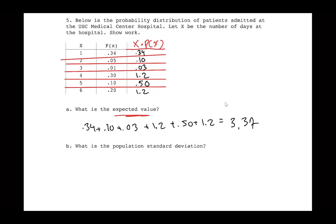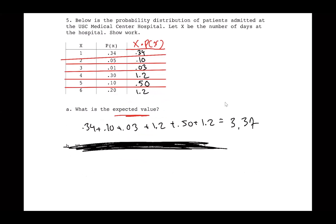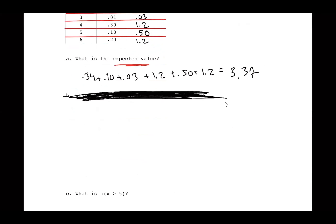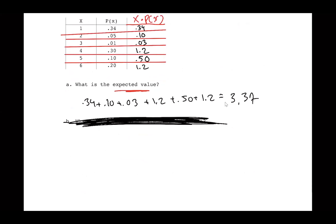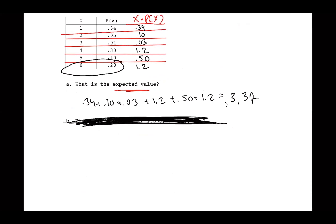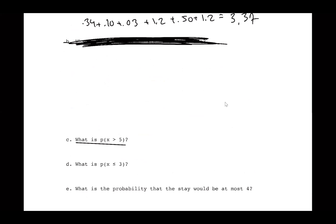Standard deviation is also not on the test so don't worry about it. For part C: what is P(X > 5)? X greater than 5 means x = 6 only, so P(6) = 0.20.